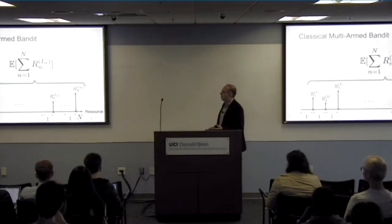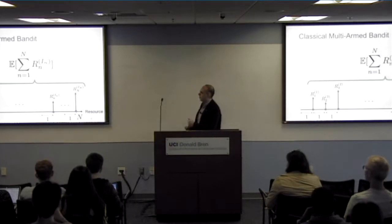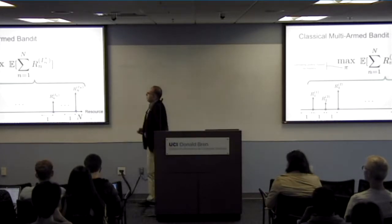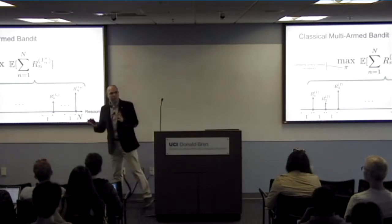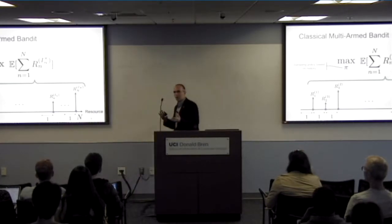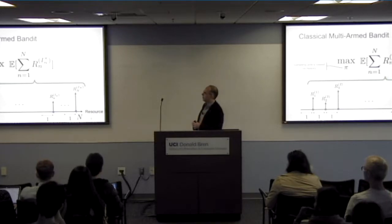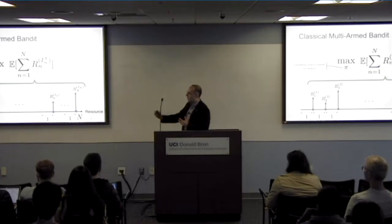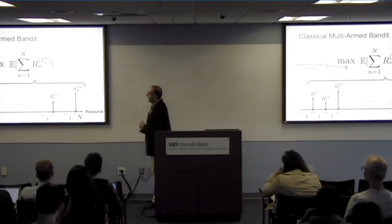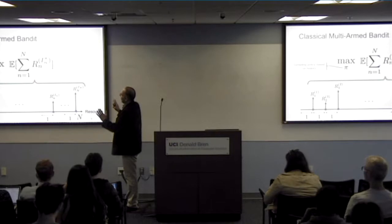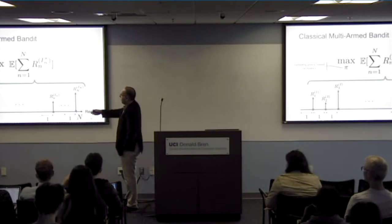This is to be done without knowledge of the random variable arm distributions. We're going to collect information as we pull. So there is this so-called exploration and exploitation trade-off that we have to optimize. We have to explore the arms, get some information, and then exploit that knowledge to get the best out of the system. This is the classical multi-armed bandit problem, and this policy is what we need to design.